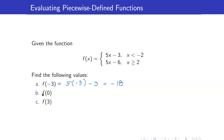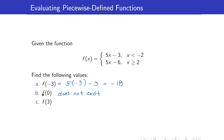For f of 0: note that 0 does not satisfy either of the conditions, so f of 0 does not exist — there is no value for that. For f of 3: the input 3 satisfies x greater than or equal to 2, so we use the formula 5x minus 6. That is 5 times 3 minus 6, giving us 15 minus 6, which equals 9.